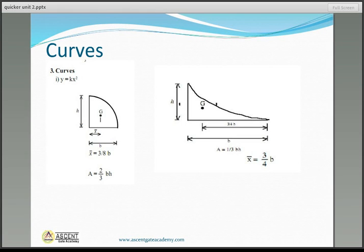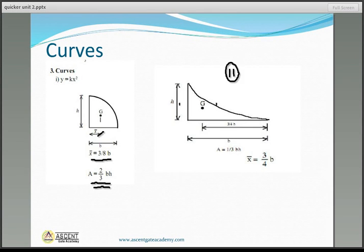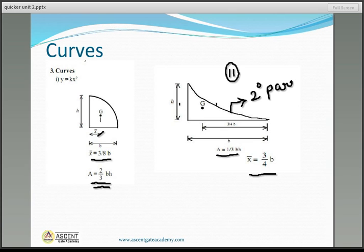For a second-degree parabola, there are two types. In the first type, area equals (2/3)B × H, and X̄ equals (3/8)B. In the second type, also a second-degree parabola, area equals (1/3)B × H, and the distance X̄ from that end equals (3/4)B.